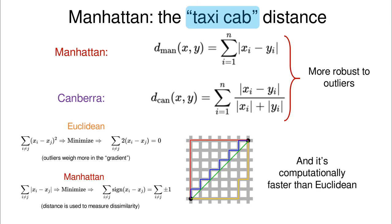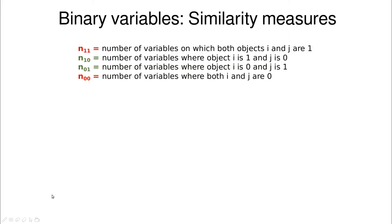The other important point is that Manhattan is computationally more efficient than Euclidean. Why is that? Because for a computer, calculating the square and then the square root is less efficient than just taking the absolute value.